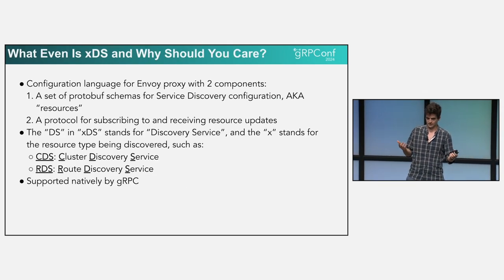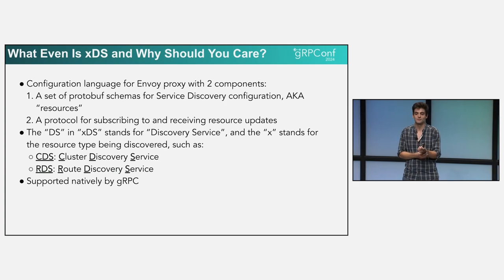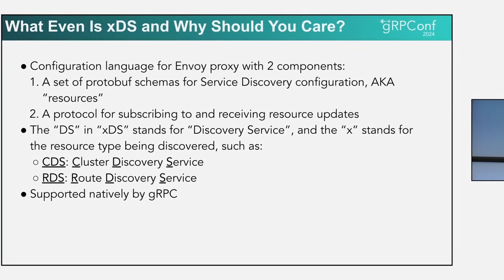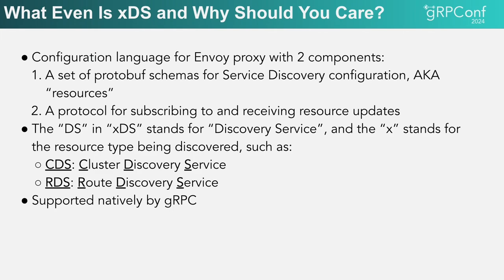So, what even is XDS? It's the configuration for Envoy, and it's got two components: a set of proto-schemas which define the service discovery configuration — otherwise known as resources — and a protocol for subscribing to and receiving updates on those resources. The DS in XDS stands for discovery service, and the X stands for the resource type being discovered.